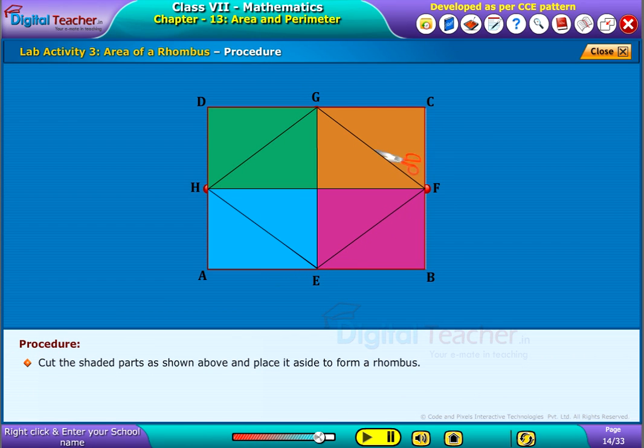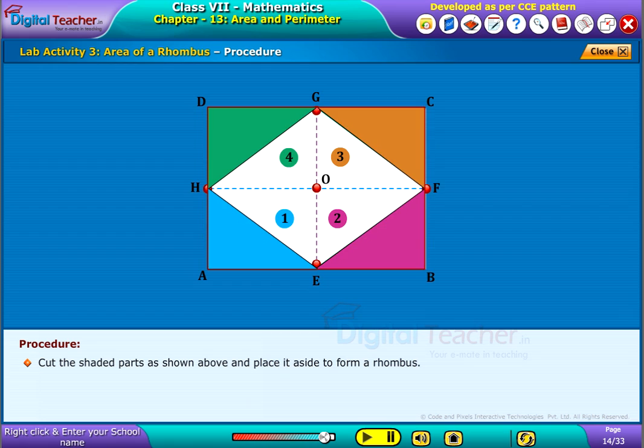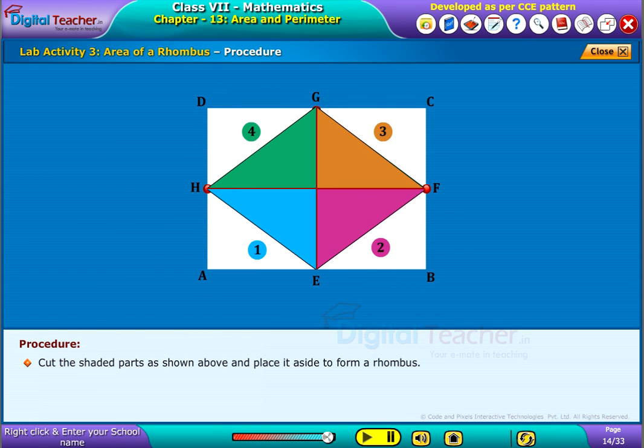Cut the shaded parts as shown above and place it aside to form a rhombus.